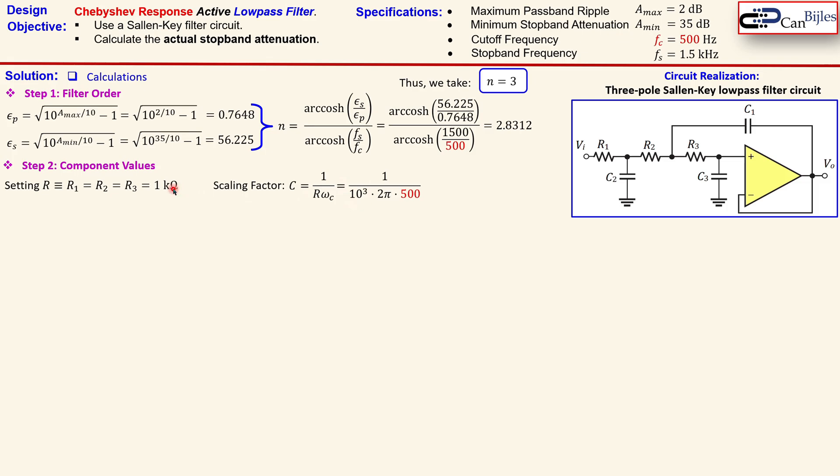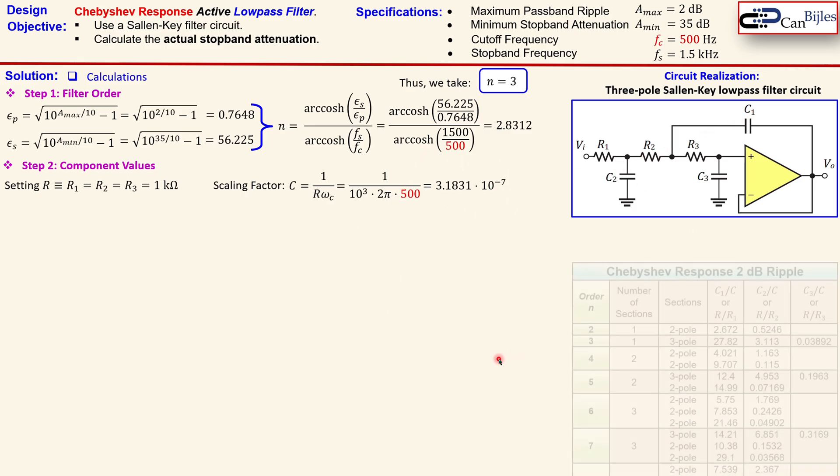Now when you substitute here the values, we know that 1,000 for R, 1,000 ohm or 1 kilo ohm, 2 pi times 500 hertz. And that will result in 3.1831 approximately times 10 to the power minus 7. And this is an important value we need to use to go to the capacitor values here in this circuit.